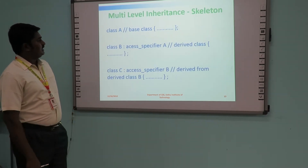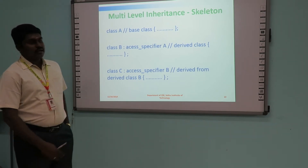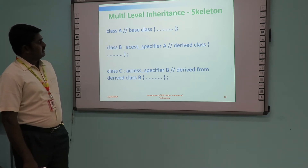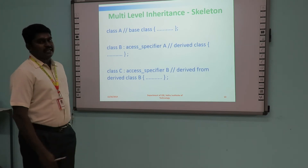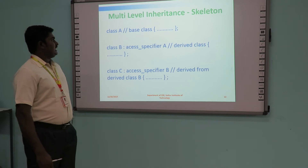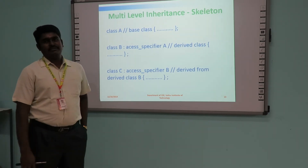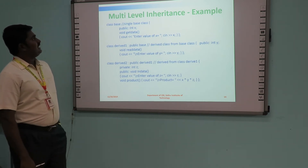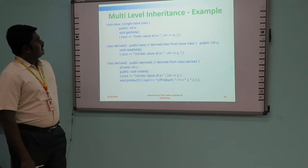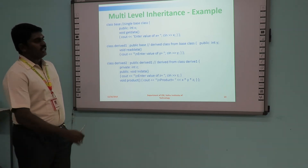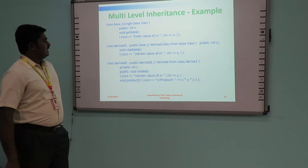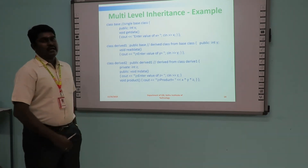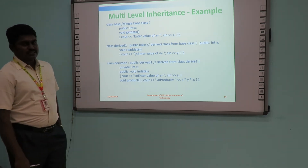The syntax for multi-level inheritance: class A is the base class, class B is a derived class which inherits base class A, and class C inherits class B. Whenever we create the object of class C, the members of class A, class B, and class C will all be available in that object. In the example, we have a single base class and two derived classes. The first derived class is constructed using the base class, and the second derived class is constructed using derived class 1. After creating the object of derived class 2, members of the base class, derived class 1, and derived class 2 are all available.